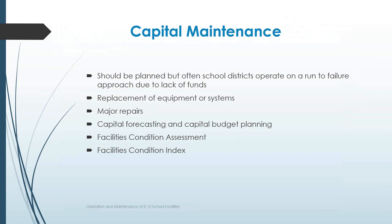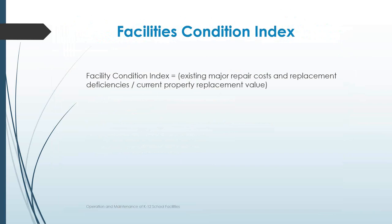A facilities condition assessment will also help you develop a facilities condition index for your building. The facilities condition index takes the existing major repair costs and replacement deficiencies and divides that by the current property replacement value. It helps determine whether repair or replacement is more cost effective. Most professionals will recommend that if the major repair costs and replacement deficiencies reach 50% of the property replacement value for that building, it is more cost effective to replace it than to repair it.